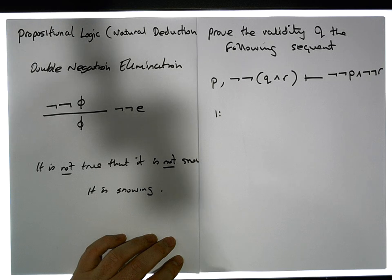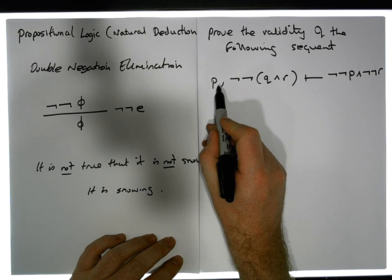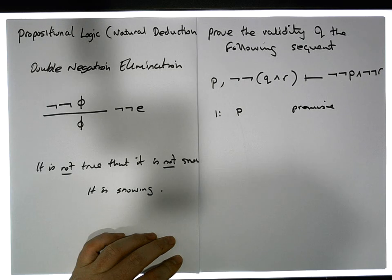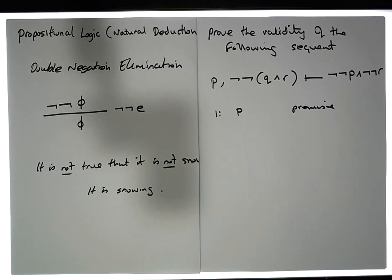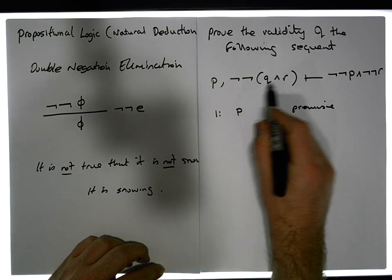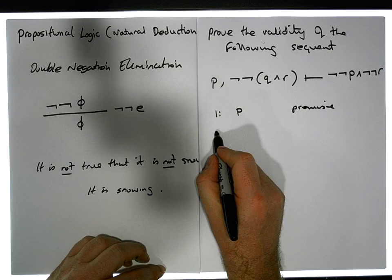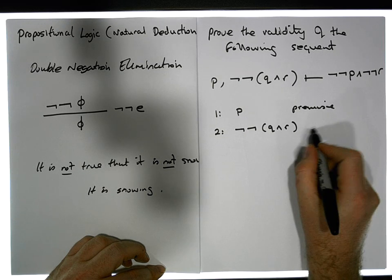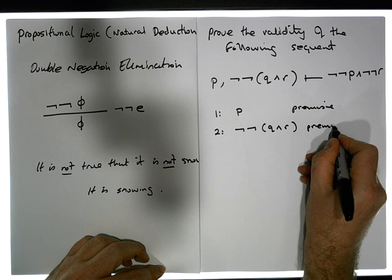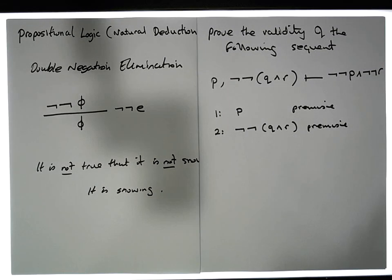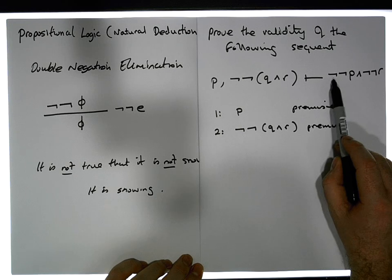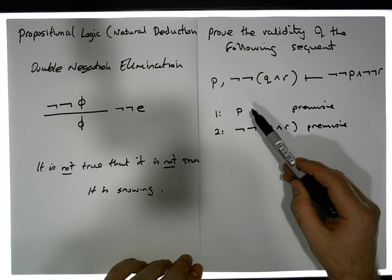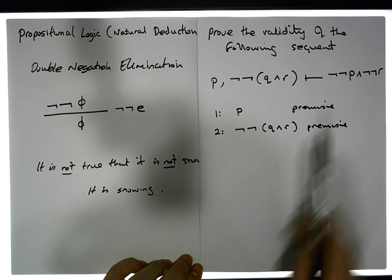Let's start with step one: listing our premises. We know p is true — that's from the premise. We also know that the double negation of (q ∧ r) is true because that's listed in our premises. What we'd like to conclude is that the double negation of p, ANDed with the double negation of r, can actually be deduced from these premises.